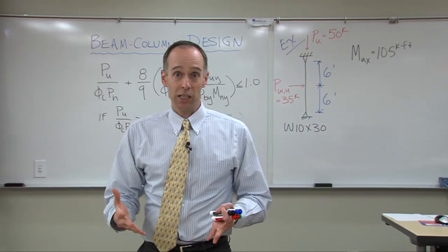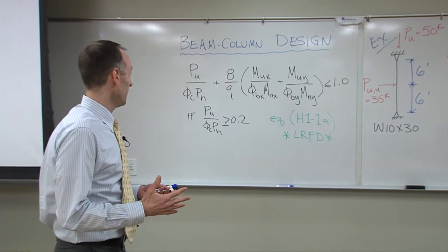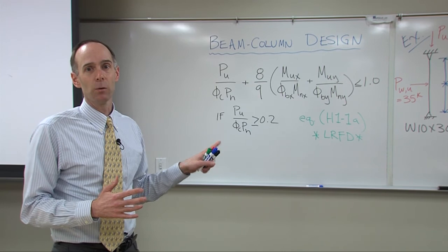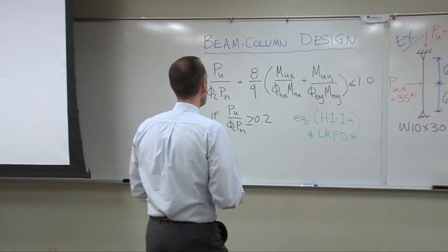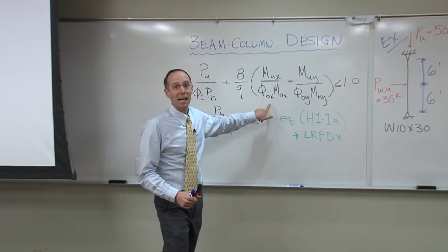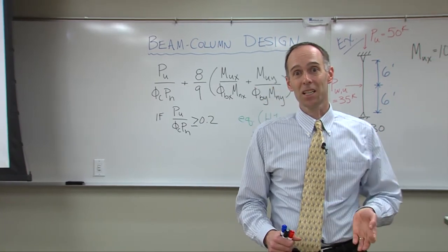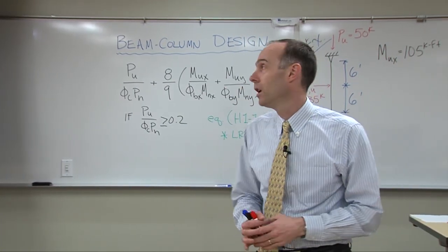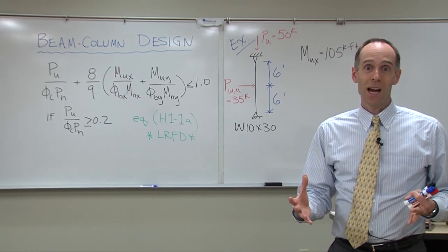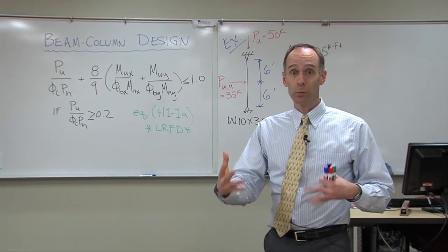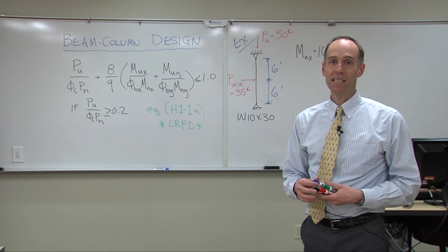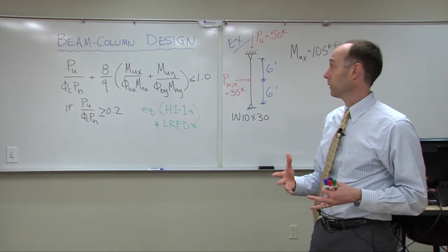What I want to talk about is that when we did that first example using this interaction equation, it was fairly tedious to calculate. We've got to calculate the column capacity, we've got to calculate the moment capacity, and that was tedious — especially since the section, that W10 by 30, wasn't in some of the more convenient tables. So when we're talking about design, where you're going to have to iterate and possibly check multiple sections, you want to do this fairly quickly. I'm going to talk about how we can speed the analysis up.